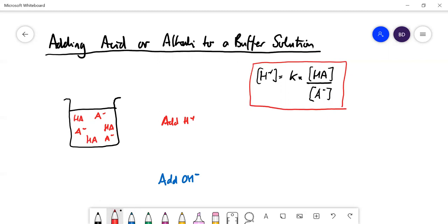Think about the acid first. Which of these species, HA or A-, is the acid H+ going to react with? Well, it's going to react with A-, and it's going to turn that A- into HA.